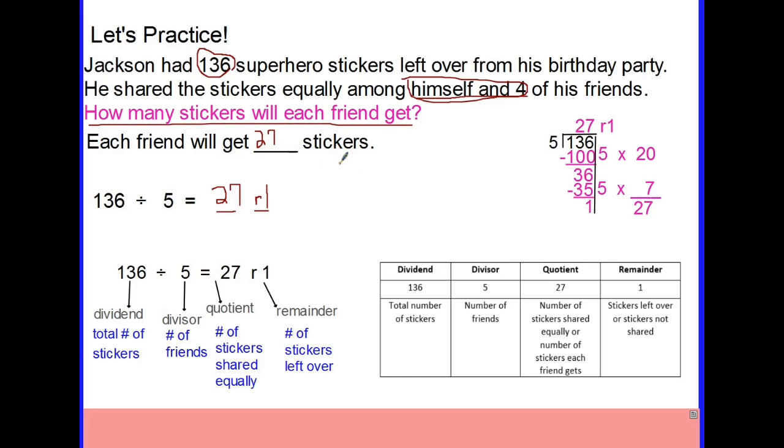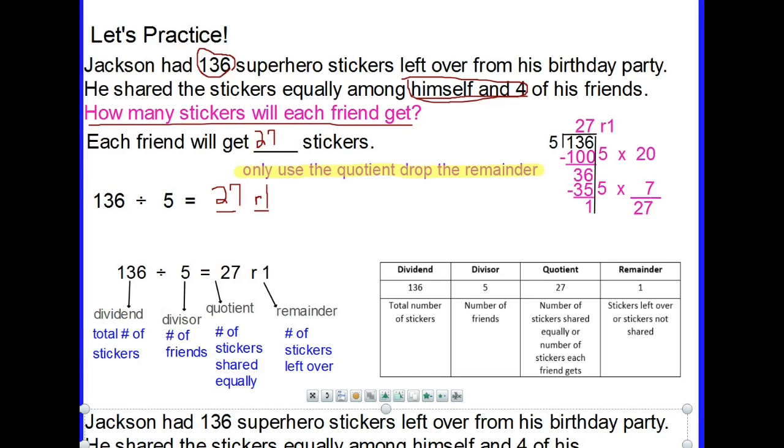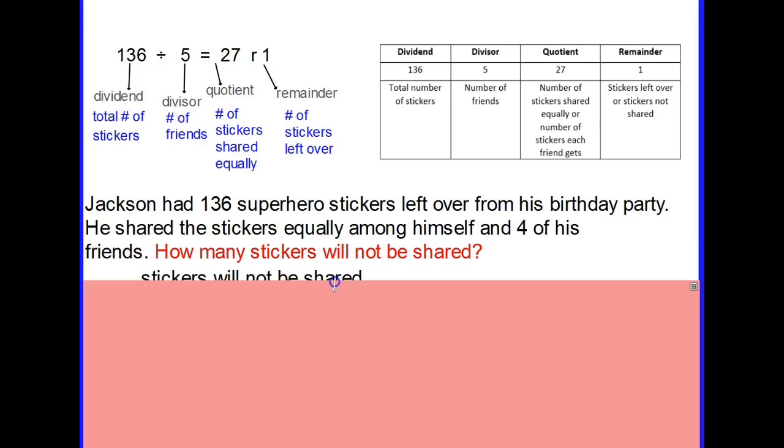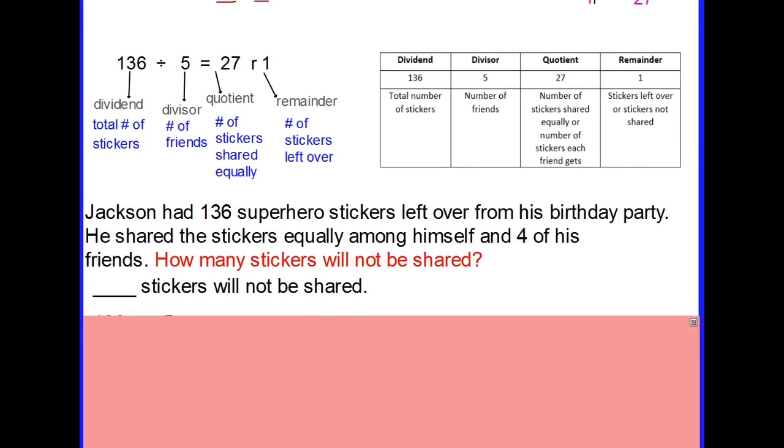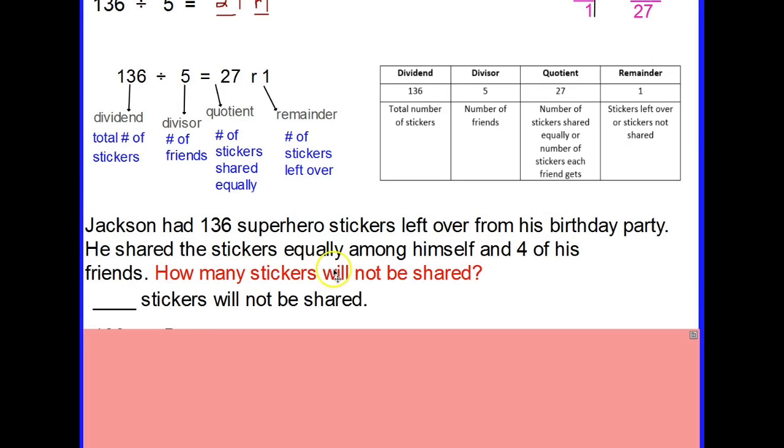We only use the quotient and we drop the remainder. It's very important for us to know we're only using the quotient and dropping the remainder. Now we're using the same problem but this time our question is different. Jackson had 136 superhero stickers left over from his party. He's going to share them equally among himself and four of his friends, so it's still five people. This time, how many stickers will not be shared?